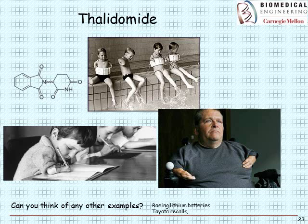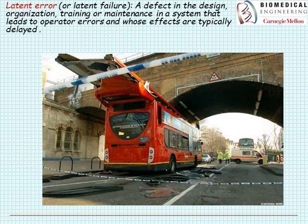Other recent examples: the Boeing Dreamliner had a lithium battery accident causing millions of dollars in losses and reputational damage. Toyota had a massive recall for a sticky gas pedal. One more definition — a latent error: a defect in the design, organization, training, or maintenance of the system that leads to operator error and whose effects are typically delayed.